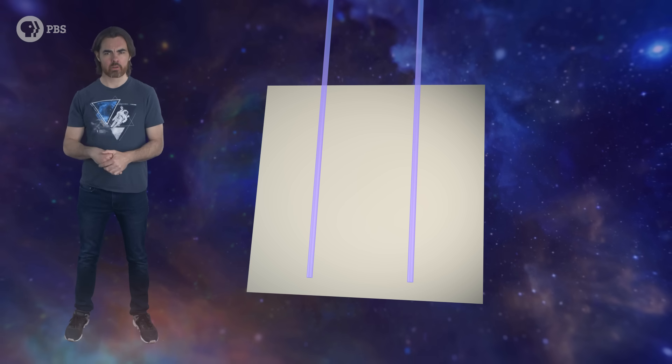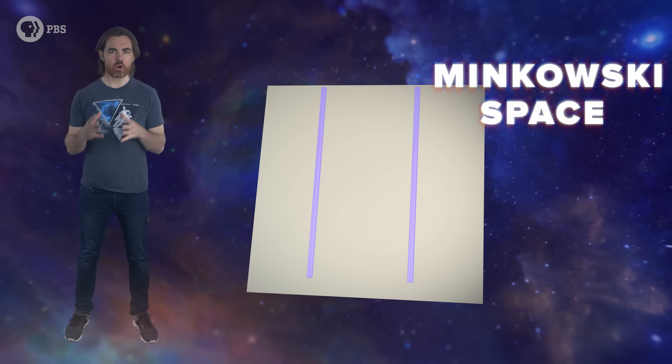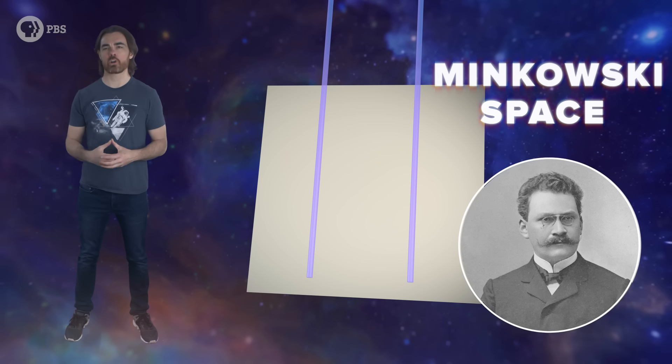Then there's the flat universe – classic straightforward geometry. Parallel lines stay parallel, and it goes on forever. In GR this is Minkowski space, after Hermann Minkowski, teacher and colleague of Albert Einstein.